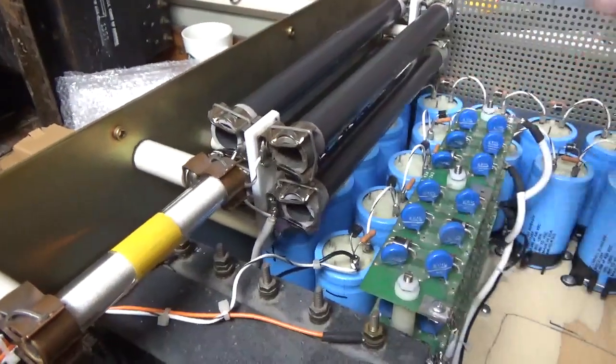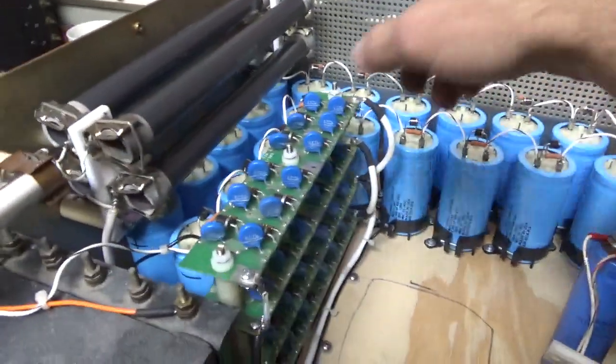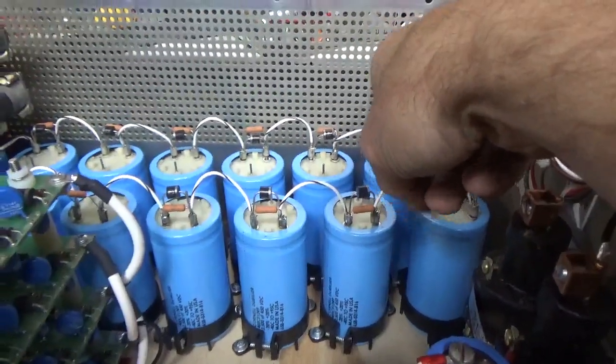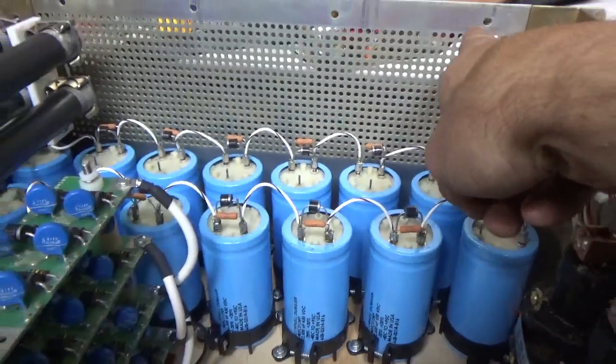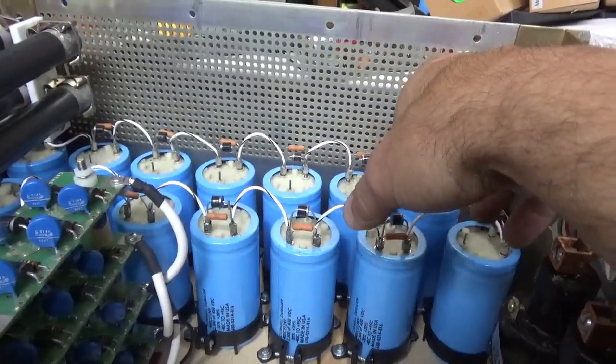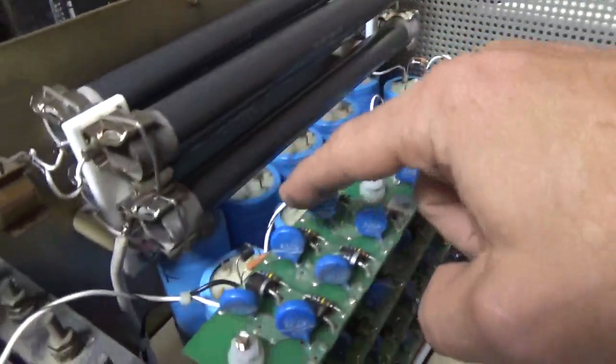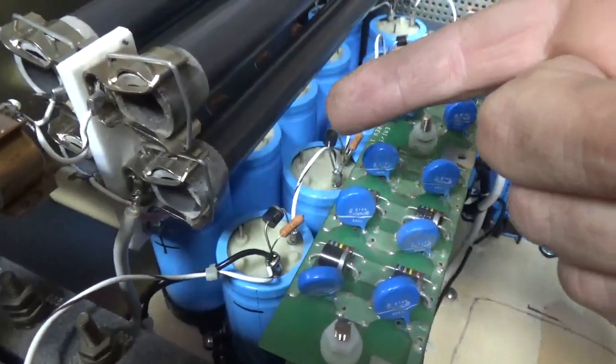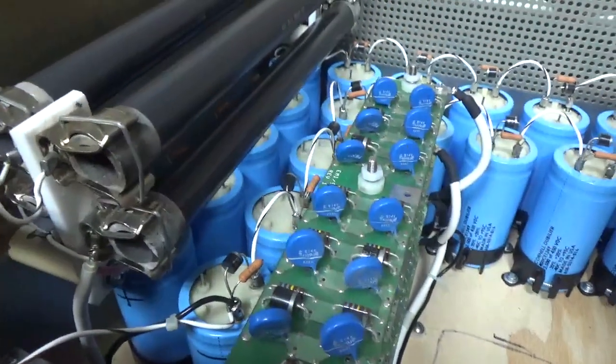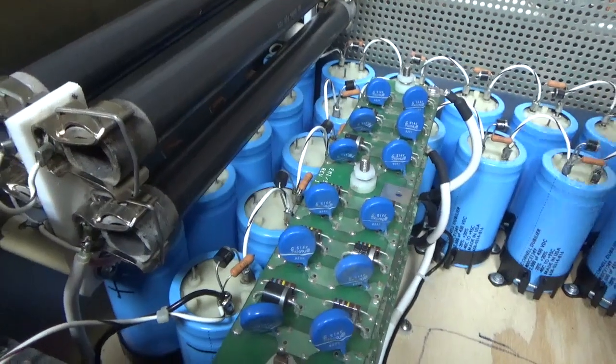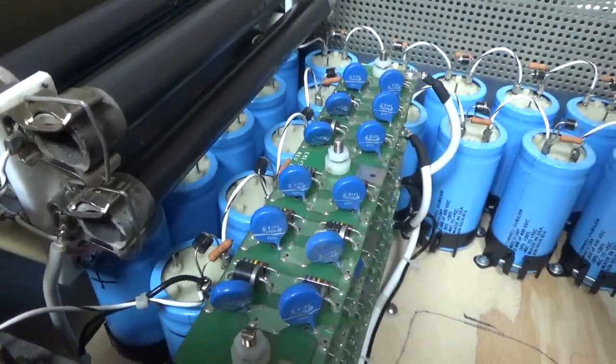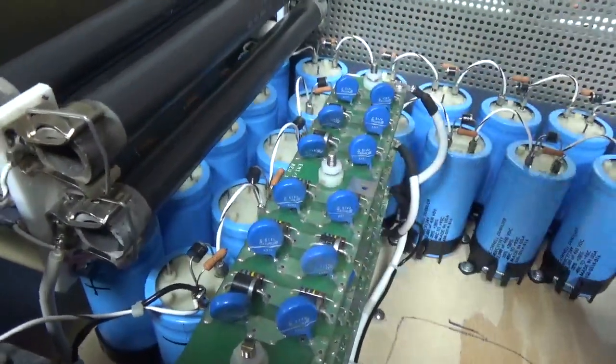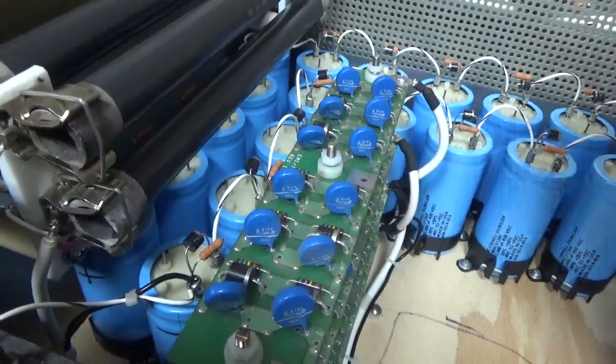To know if the filter caps are still charged, I'm going to have a neon indicator lamp on the front panel. Jim actually gave me this idea, he said put a couple in series and put it across the last capacitor, which is over here, it has like 300 something volts DC across it. Well, I said, why not just use one indicator, and then just use the proper series dropping resistor. So, that'll tell me, it'll give me a rough indication that the caps are charged if that's lit. But if it's not lit, you still don't assume,